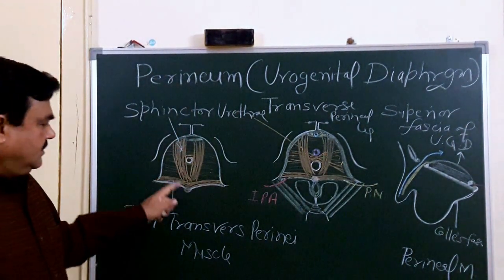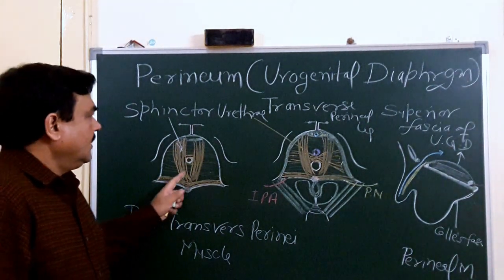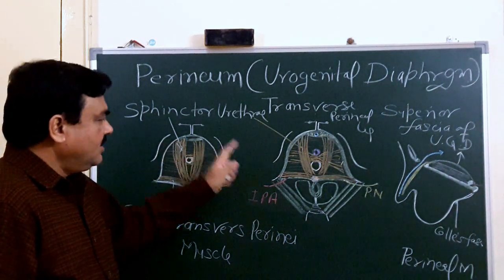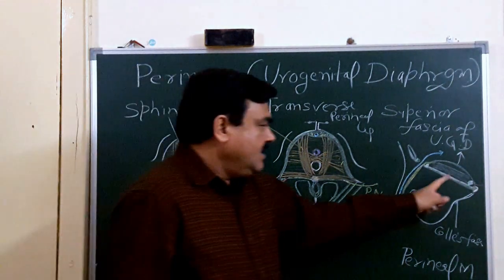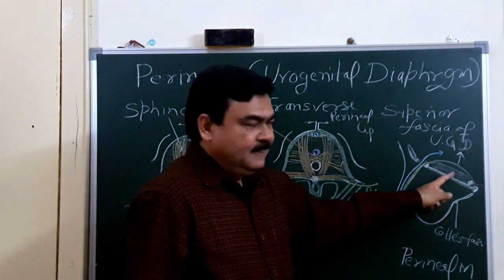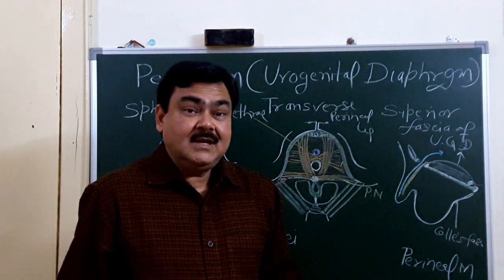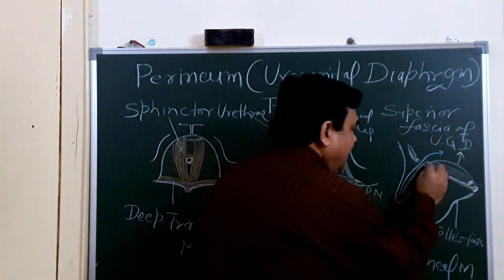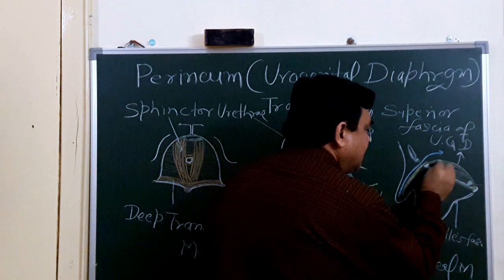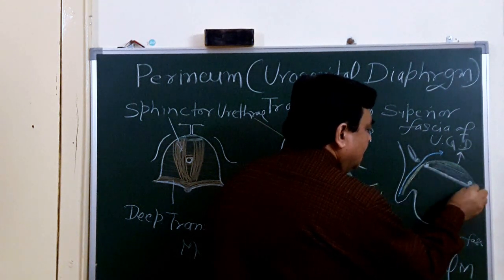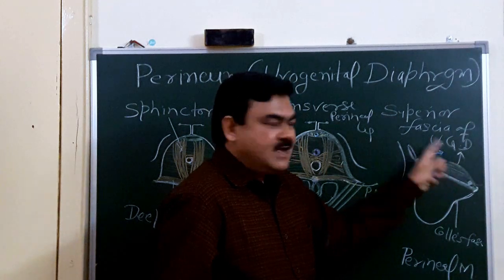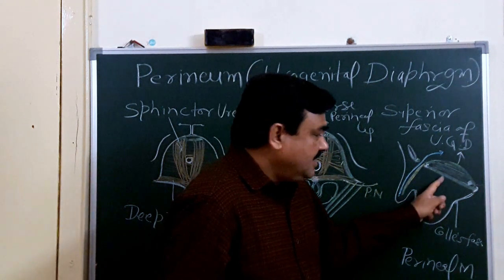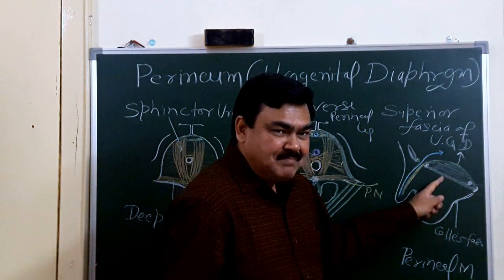So this muscle forms the urogenital diaphragm. Two muscles — deep transverse perineal and sphincter urethra — form the urogenital diaphragm. This urogenital diaphragm is superiorly covered by the superior fascia of urogenital diaphragm, and inferiorly covered by the inferior fascia of urogenital diaphragm, which becomes thicker and forms the perineal membrane.